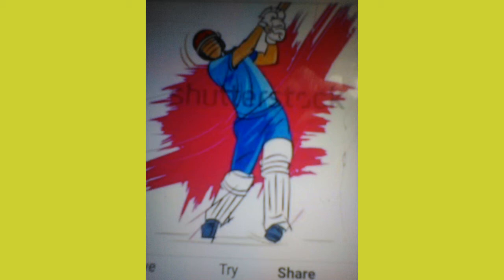10. Caught: a batsman is declared out when the fielder catches the ball. Often the ball is caught by the wicket keeper — then it is called caught behind.